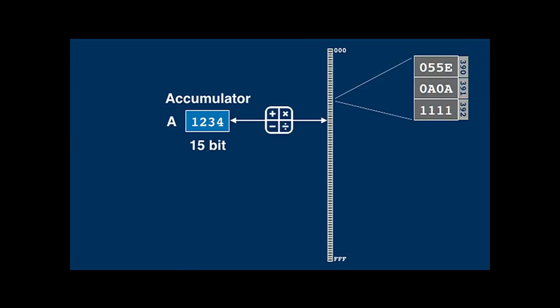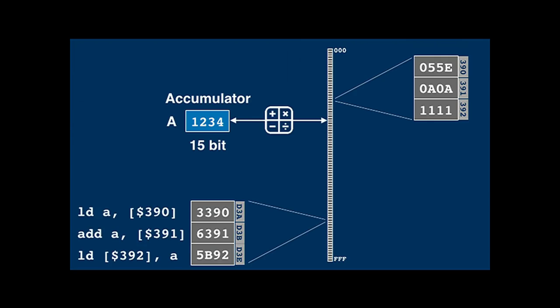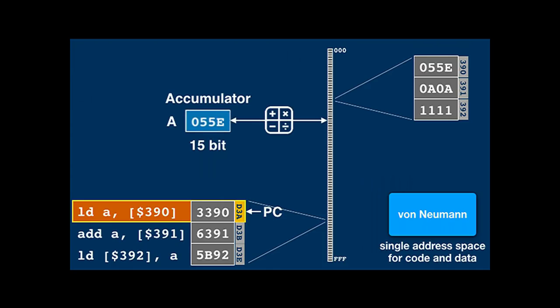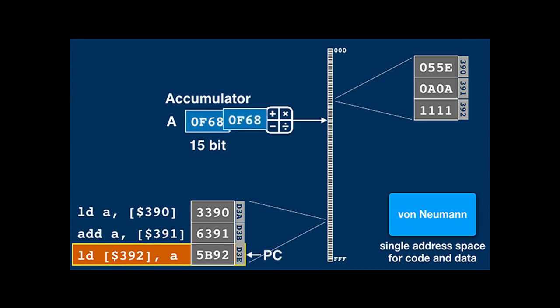Values may represent integers, while other words are meant to be decoded as machine code instructions. Code and data in a single address space make the AGC a so-called von Neumann machine. The CPU's program counter (PC) always holds the address of the instruction to be executed next. The load instruction copies the contents of a given memory cell into the accumulator, and the PC goes on to the next instruction. The add instruction adds the contents of a given memory cell to the accumulator, and the store instruction copies the accumulator value into memory at a given location.